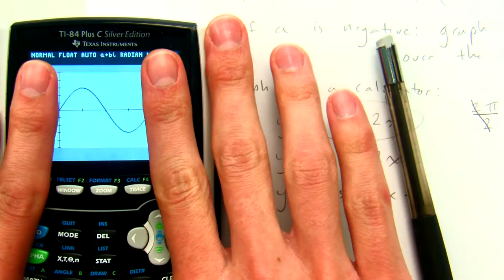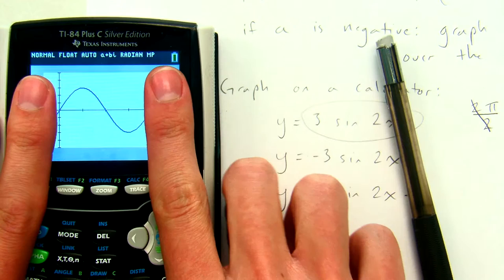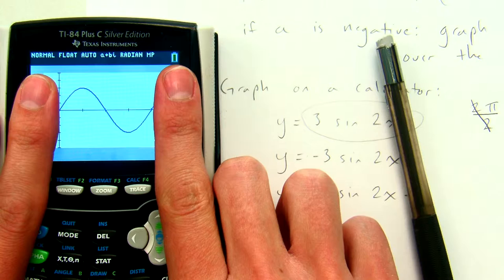So here's our graph of y equals, or sorry, this is pi because the period is just pi. Here's our graph of y equals 3 sine 2x from x equals 0 to x equals pi. Okay, looks pretty normal.